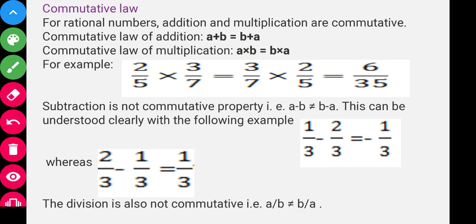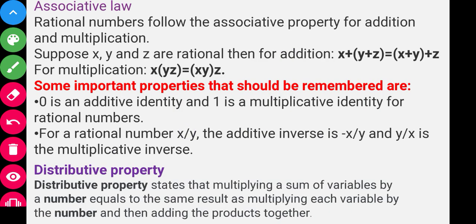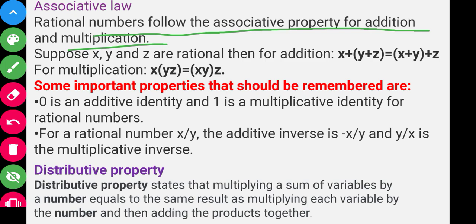Associative property: rational numbers follow the associative property for addition and multiplication. So if x, y, and z are rational numbers, then for addition: (x + y) + z = x + (y + z), and for multiplication: (x × y) × z = x × (y × z).